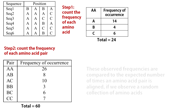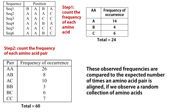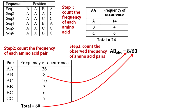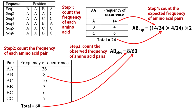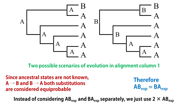These observed frequencies are compared to the expected number of times an amino acid pair is aligned. If we observe a random collection of amino acids, the observed probability of A aligning with B is 8/60, whereas the expected probability of A and B co-occurring together is (14/24) × (4/24) × 2. Why this factor of 2? This factor is there because we do not know how these sequences have evolved from their ancestor. Whether it was A or B in the ancestral sequence, we do not know, so we simply consider both cases equally probable. If A and B are in the same alignment column, the expected probability of A to B and B to A substitutions are equal, so instead of considering AB expected and BA expected separately, we just use 2 × AB expected.